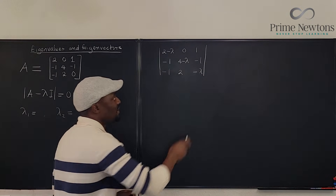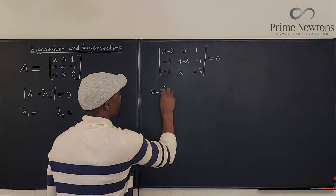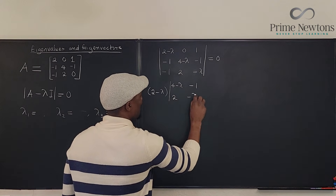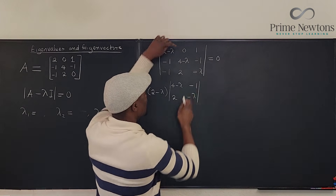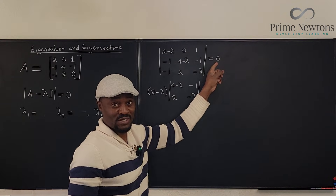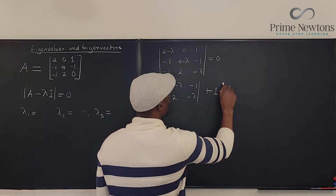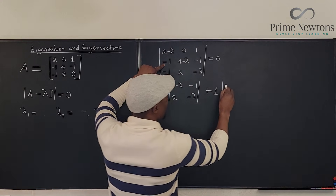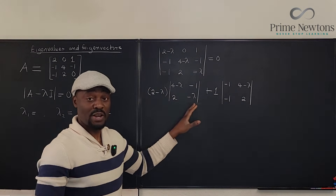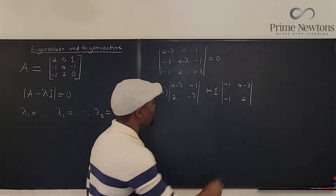We need to take this determinant and set it equal to zero. We're going to expand along the first row: 2 minus lambda multiplied by the determinant of the 2x2 submatrix with entries 4 minus lambda, minus 1, 2, minus lambda. Then minus 0 — so that term vanishes. Plus 1 times the determinant of the submatrix with minus 1, 4 minus lambda, minus 1, 2. This all equals zero.